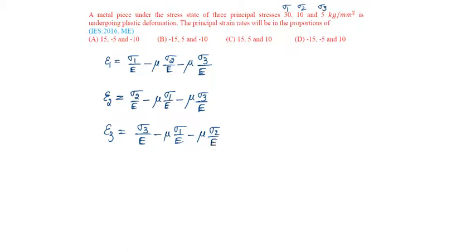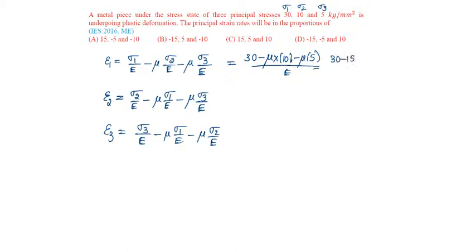Substituting: sigma 1 is 30, minus mu into sigma 2 is 10, minus mu into sigma 3 is 5, all by E. That will be equal to 30 minus 15 mu by E.